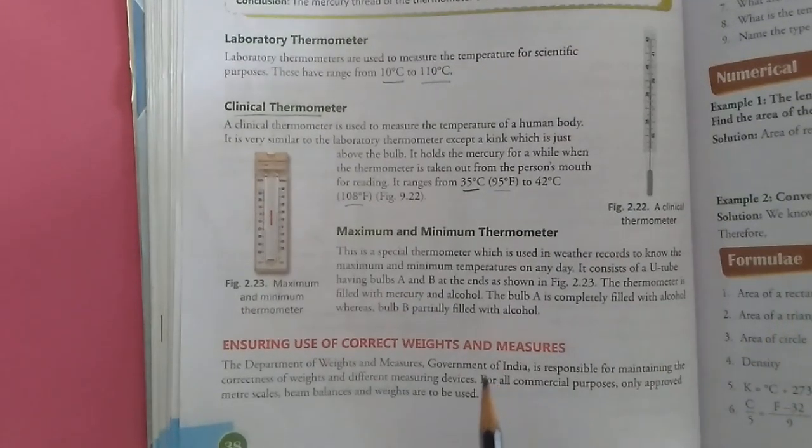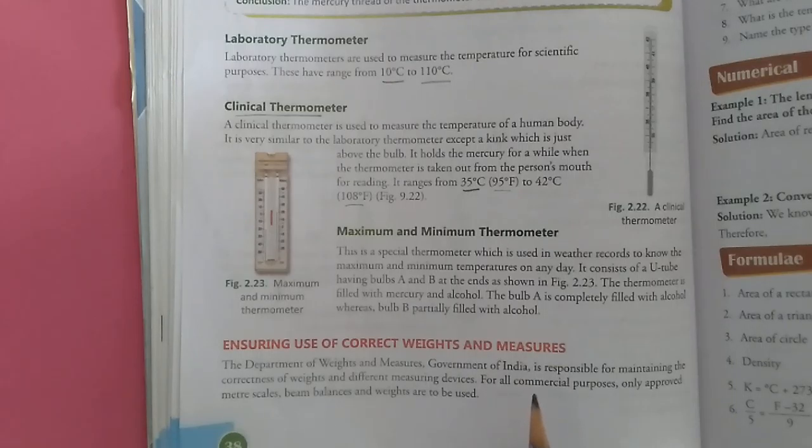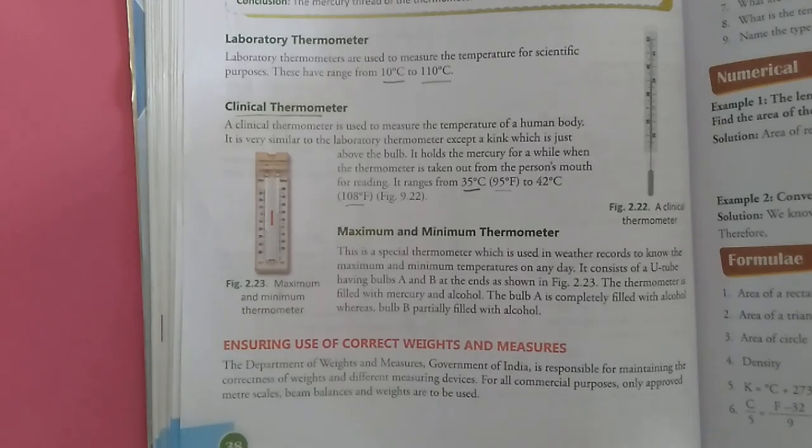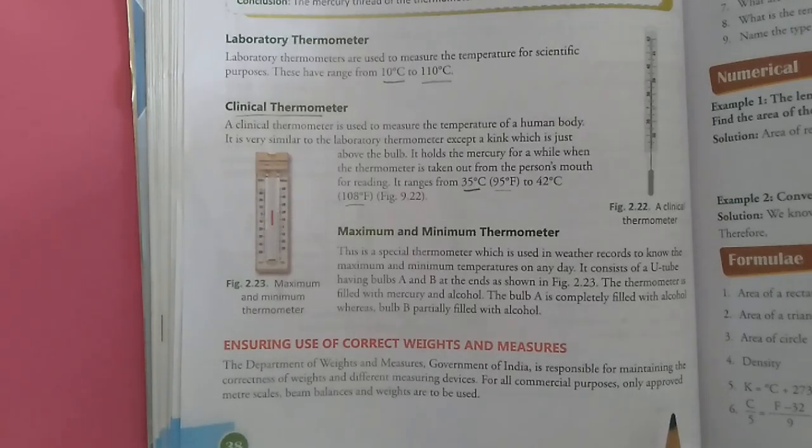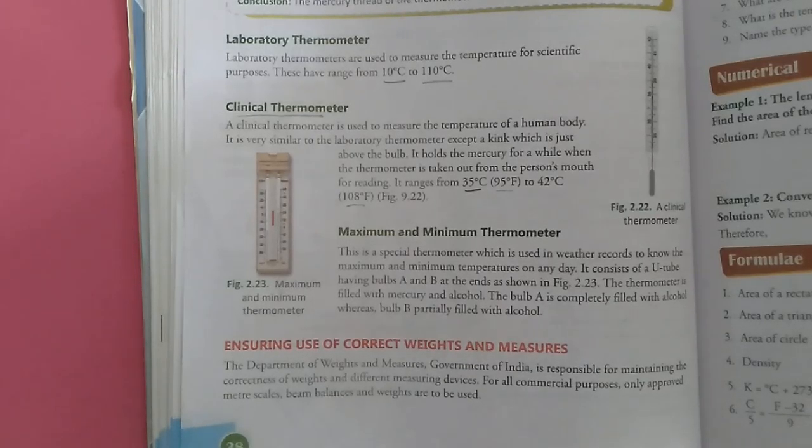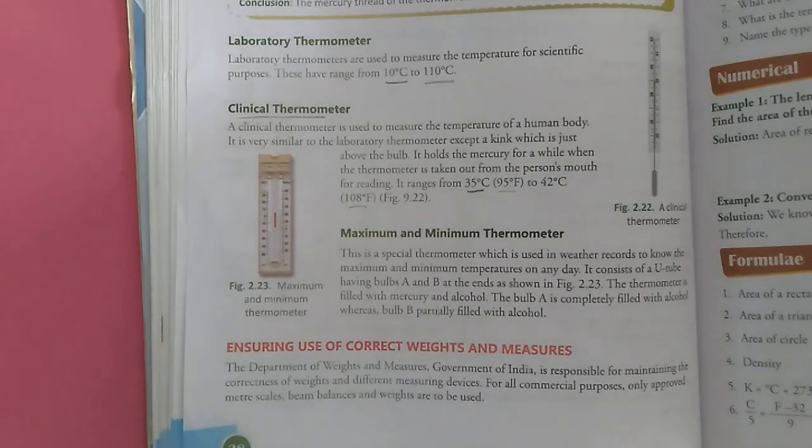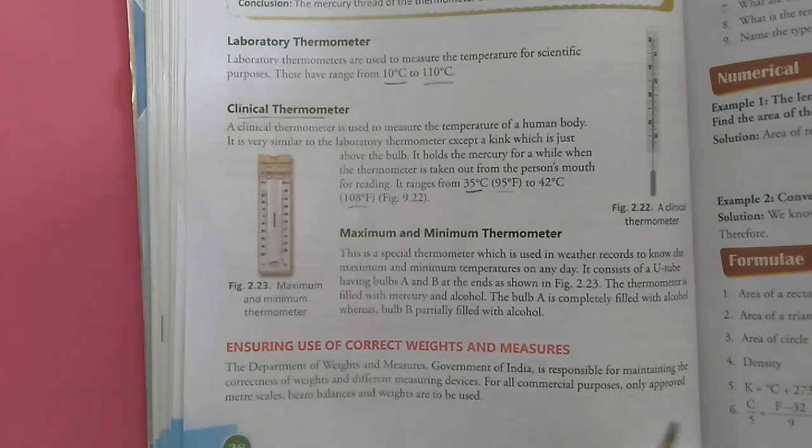Last topic is ensuring use of correct weights and measures. The Department of Weights and Measures, Government of India is responsible for maintaining the correctness of weights and different measuring devices. For all commercial purposes, only approved meter scales, beam scales and weights are to be used. With this, your chapter is completed. If you have any doubt regarding this chapter, then we will discuss in your online class. Thanks students, have a nice day.